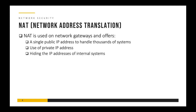NAT also allows you to hide the IP addresses of internal systems. This is an added security advantage — whatever IP addresses you use internally will be hidden from the outside world. Another security advantage is that NAT does not allow external systems to initiate communications to internal systems. A system inside your corporate network can initiate a connection outward, but the converse is not true. NAT hides internal details so that public systems cannot find out the exact IP addresses of internal systems.